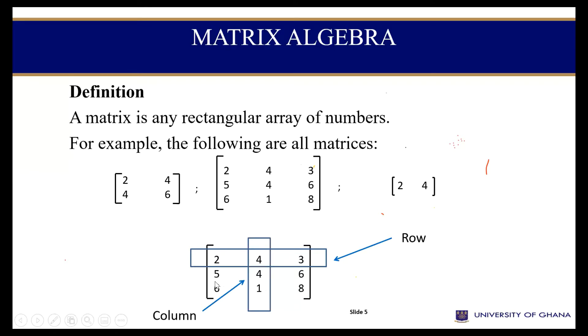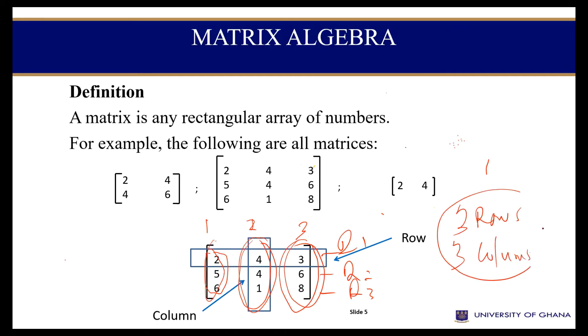So I have here column 1. This is column 2. This is column 3. In any given matrix, you should be able to identify the number of rows and number of columns. As we have here, this is row 1, this is row 2, and this is row 3, so I have 3 rows. Then this is column 1, column 2, and column 3. It also means that I have 3 columns.